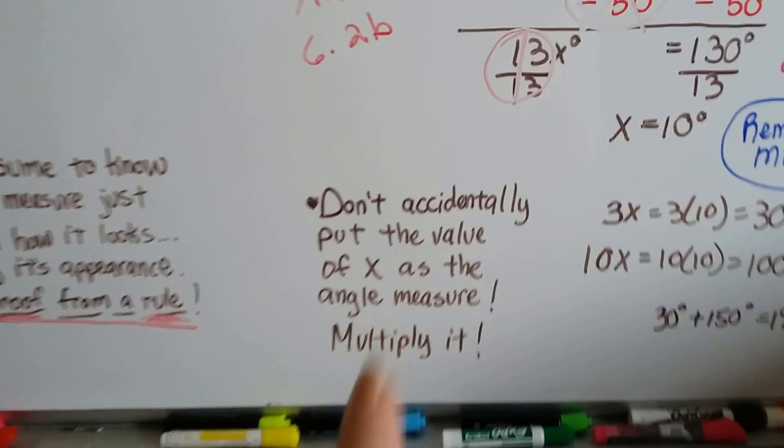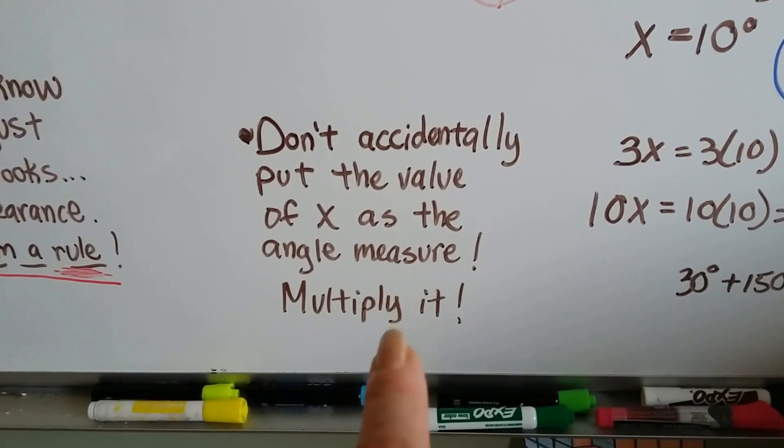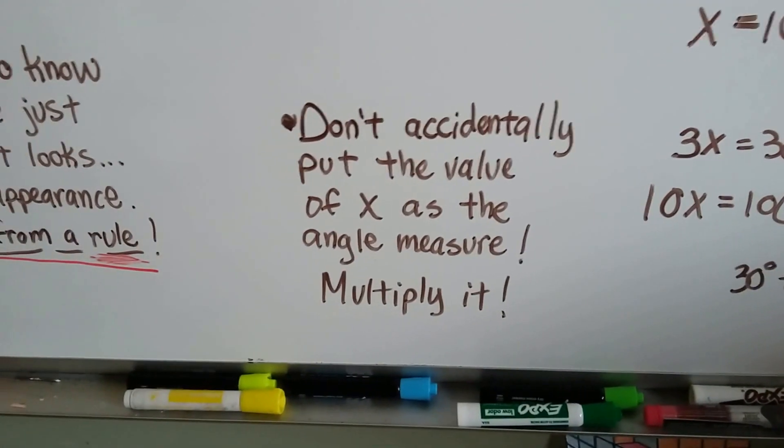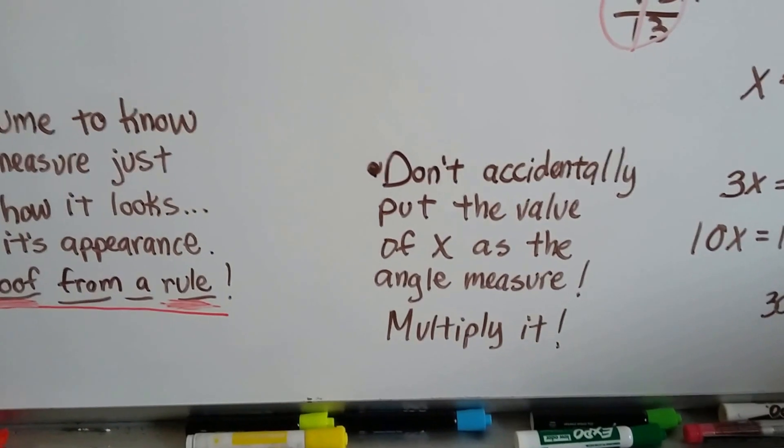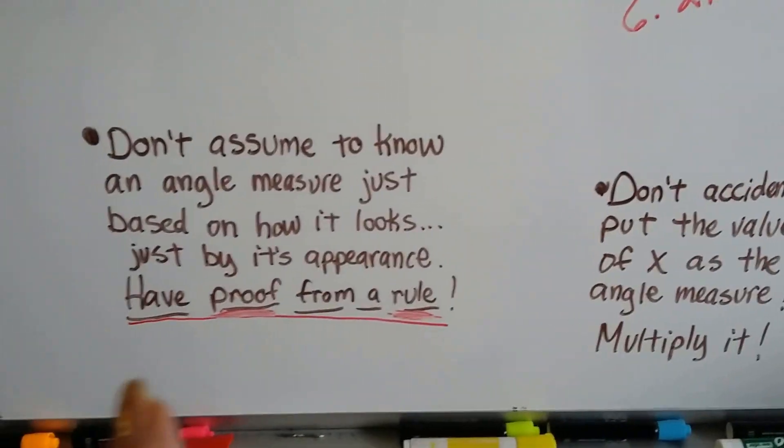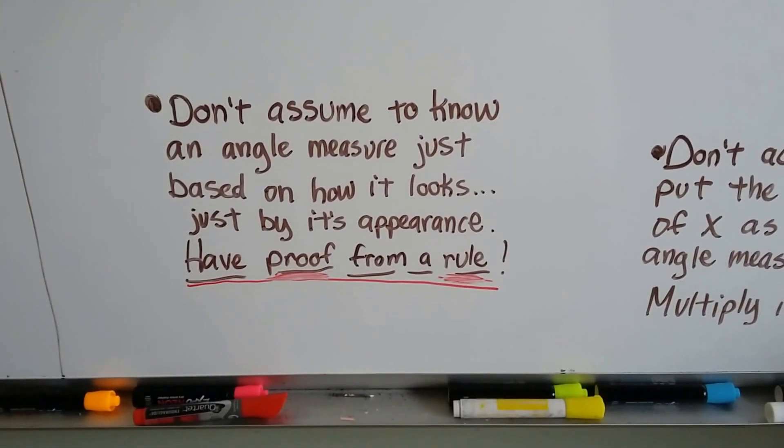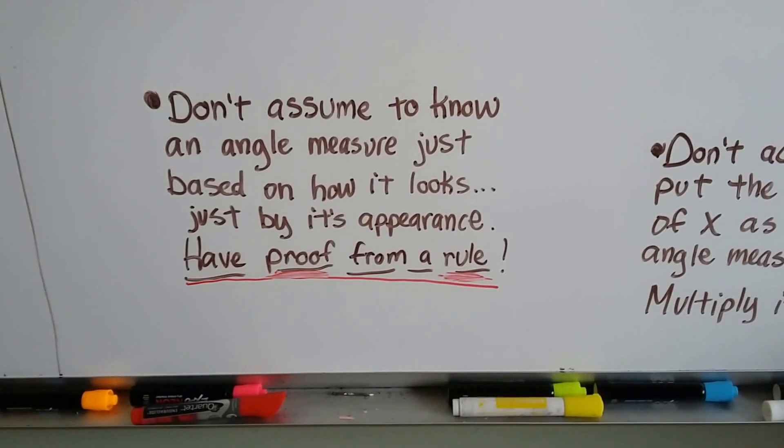And we did it as a linear equation. So, don't accidentally put the value of x as the angle measure. You still probably might have to multiply it. Sometimes you won't, but you usually have to keep multiplying it. And don't assume to know an angle measure just based on how it looks or just by its appearance.